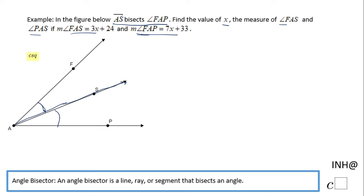FAP is the big angle, the original angle. These two angles are not congruent—only these two are congruent. In fact, the measure of angle FAP is twice the measure of angle FAS, because FAS is half of this big angle.